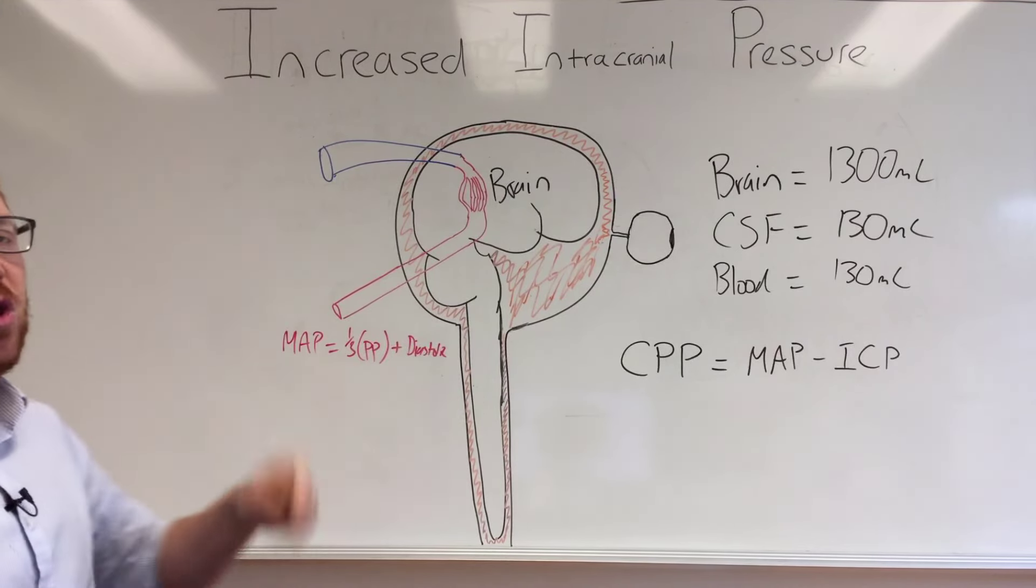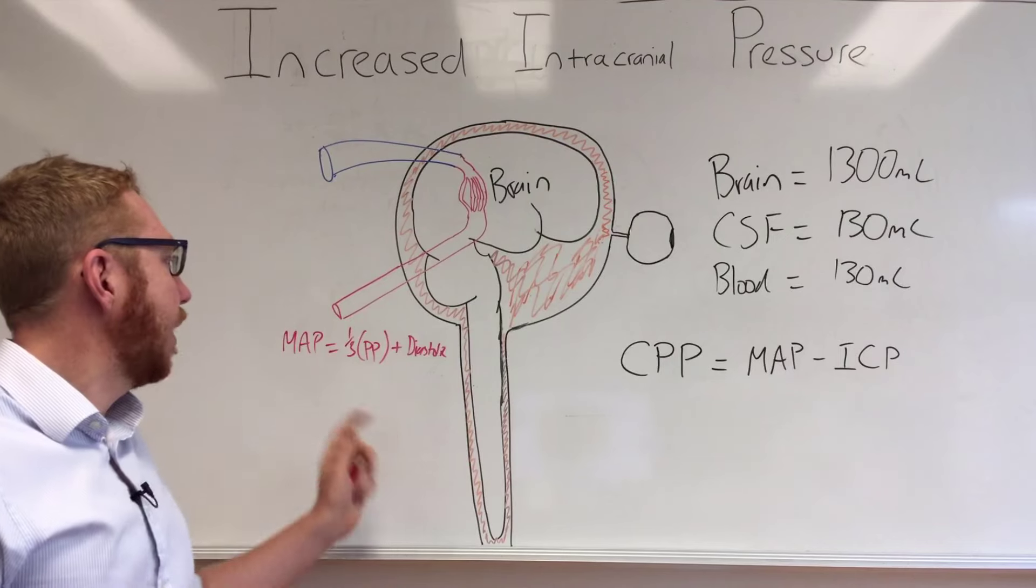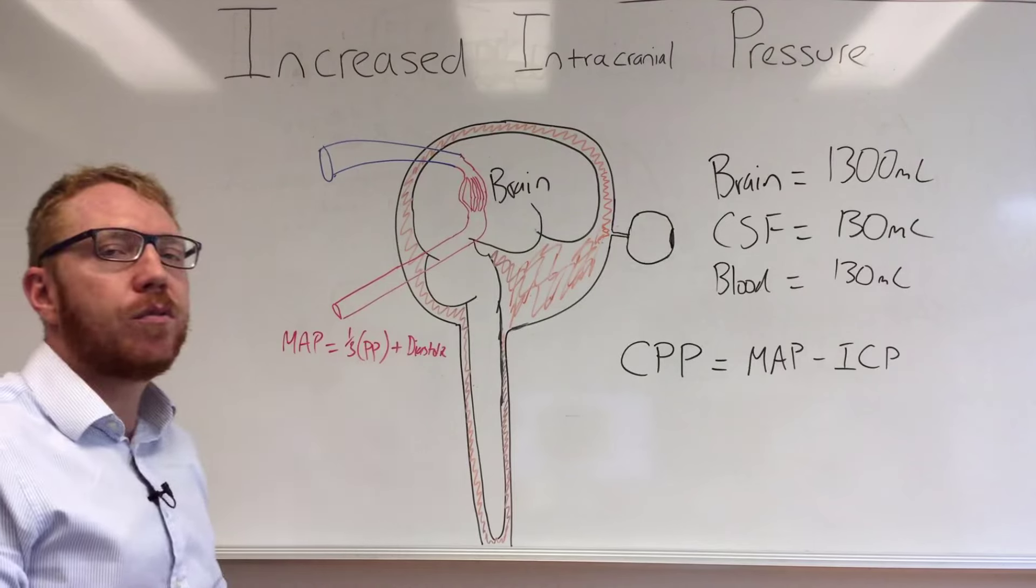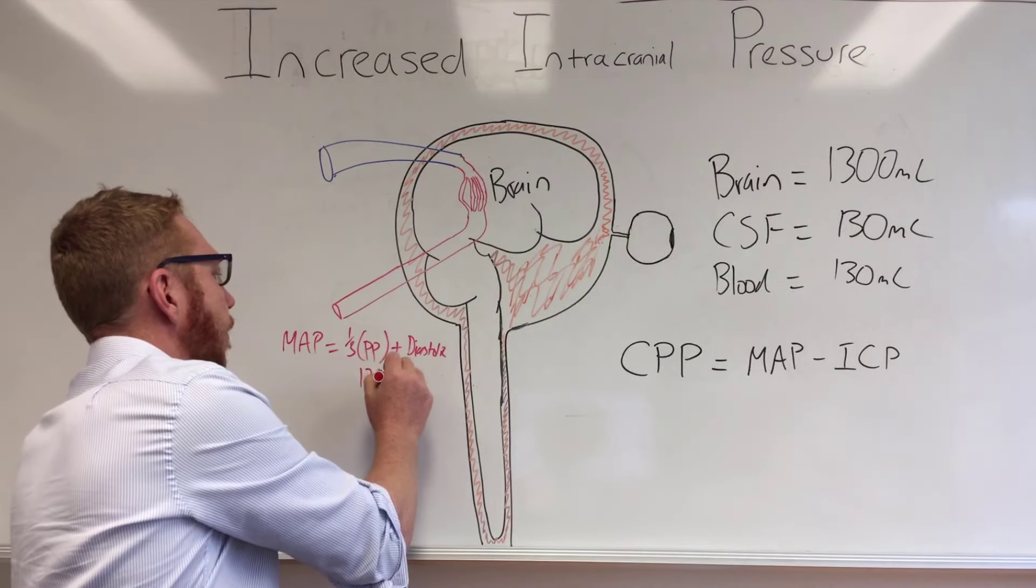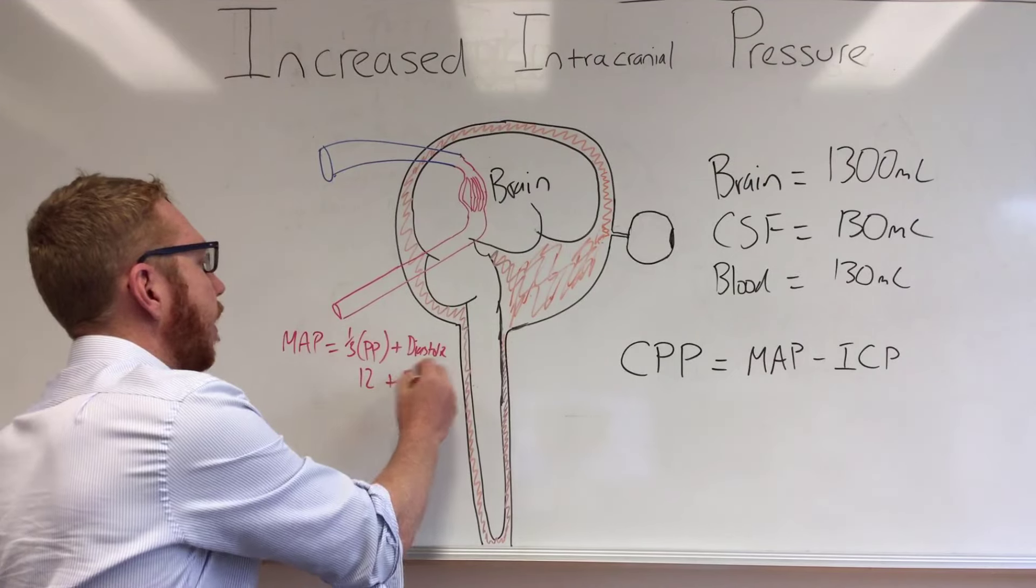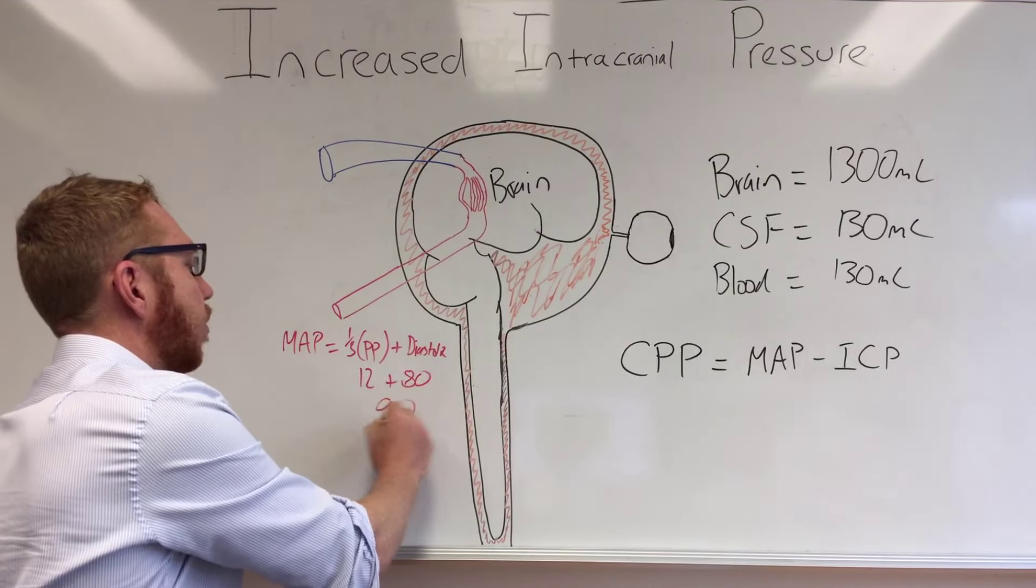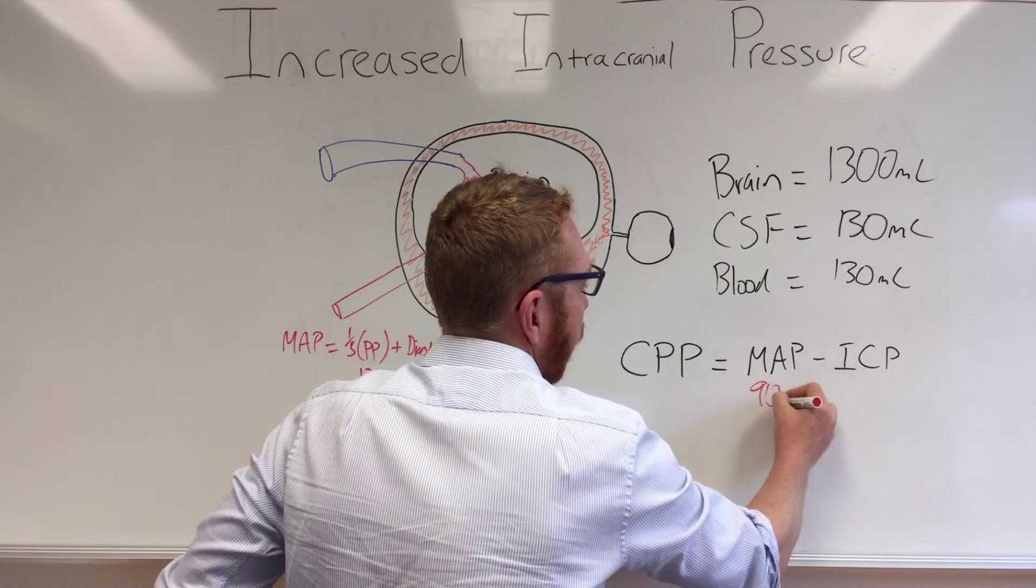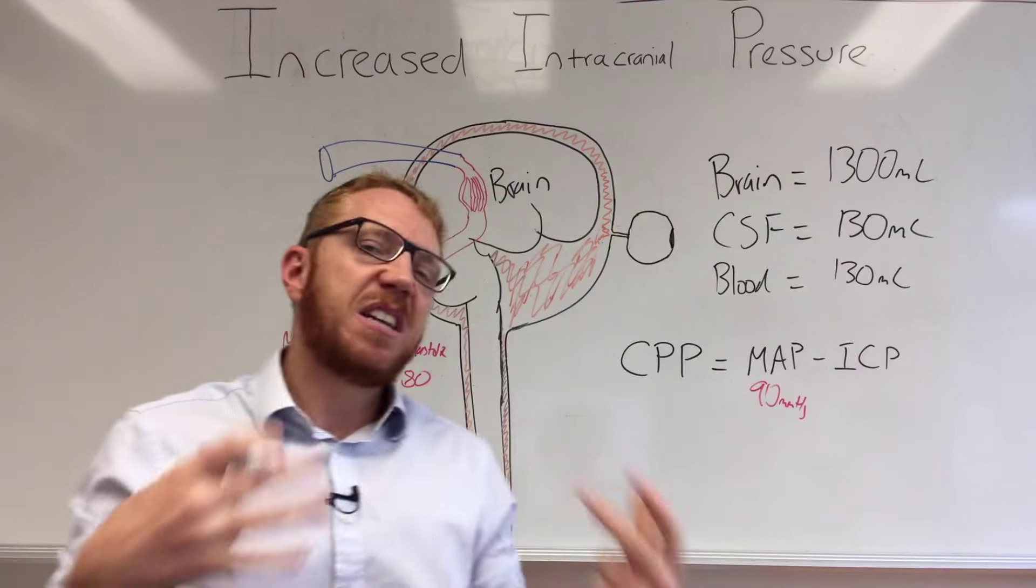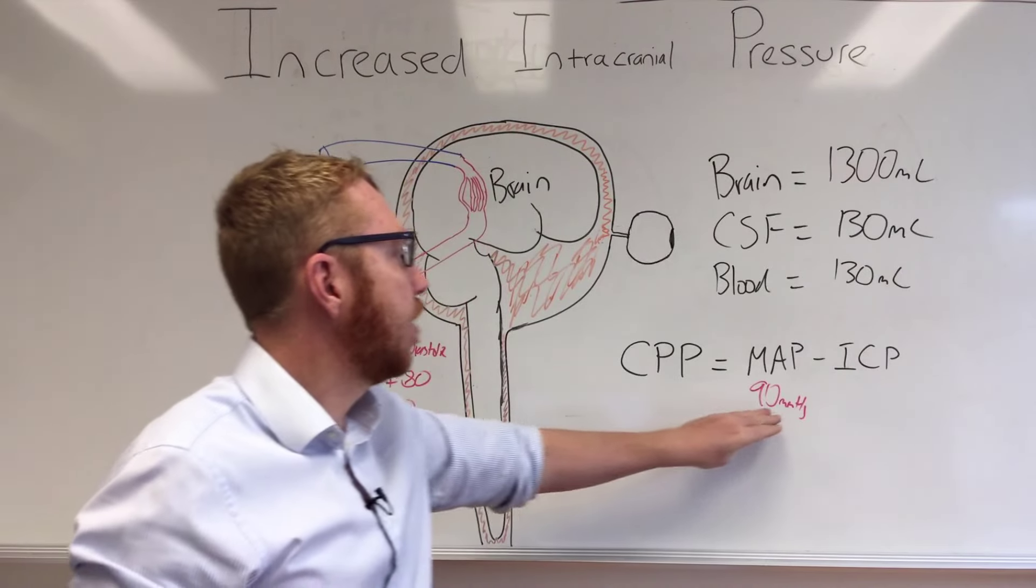If we assume just a standard BP of 120 over 80, the pulse pressure is going to be 40 and a third of 40 is about 12. When you plus the diastole of 80, we can see that we're sitting in the range of 90 millimeters. So the MAP should be in that range of 90, or that 65 to 110 is a normal range of MAP.